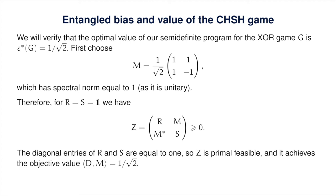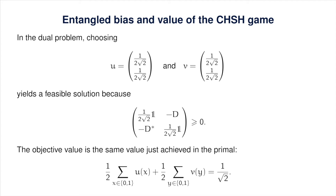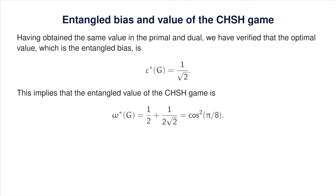In the dual, taking U and V to be specific vectors yields a positive semi-definite matrix with objective value 1/√2. Having obtained 1/√2 in both primal and dual, this value is optimal by weak duality and is therefore the entangled bias of the CHSH game. This means the entangled value of the CHSH game is 1/2 + (1/2)(1/√2), which equals cos²(π/8), as claimed.